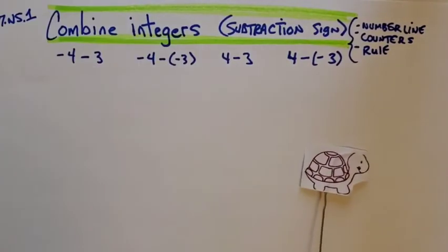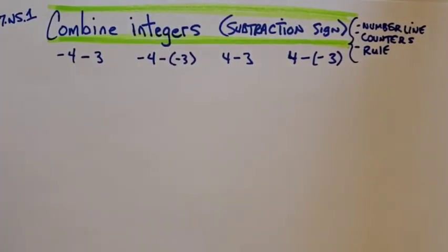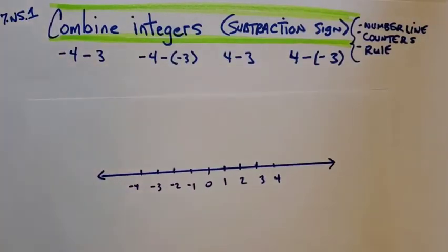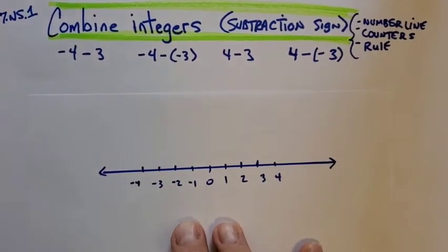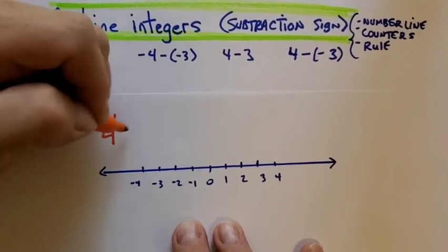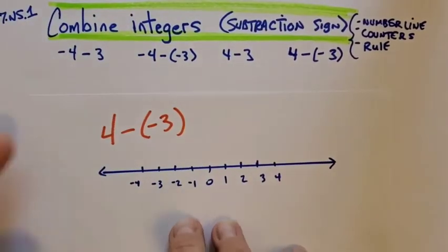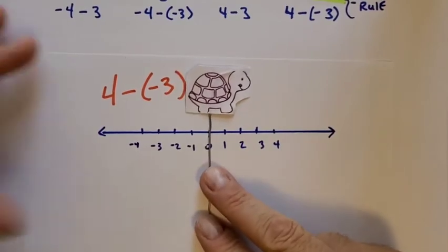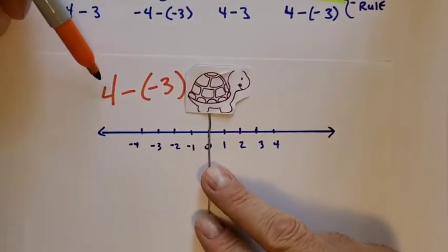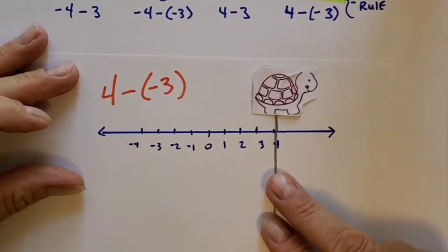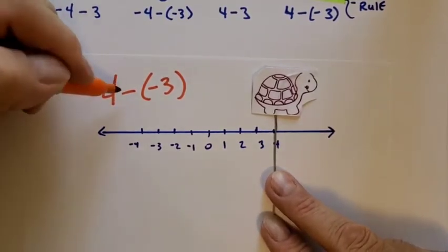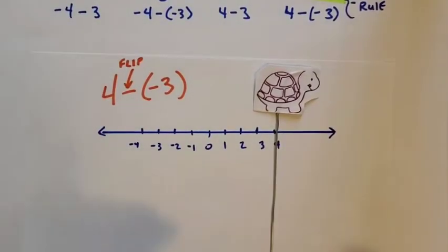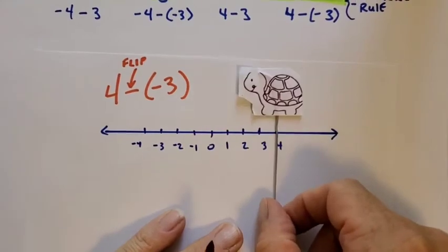So that's the big thing to remember. Let's do another one: 4 minus negative 3 on the number line. We start at 0. This says to go out to positive 4: 1, 2, 3, 4. Now we run into a subtraction sign — subtraction sign means to flip your turtle. Trini switches directions.